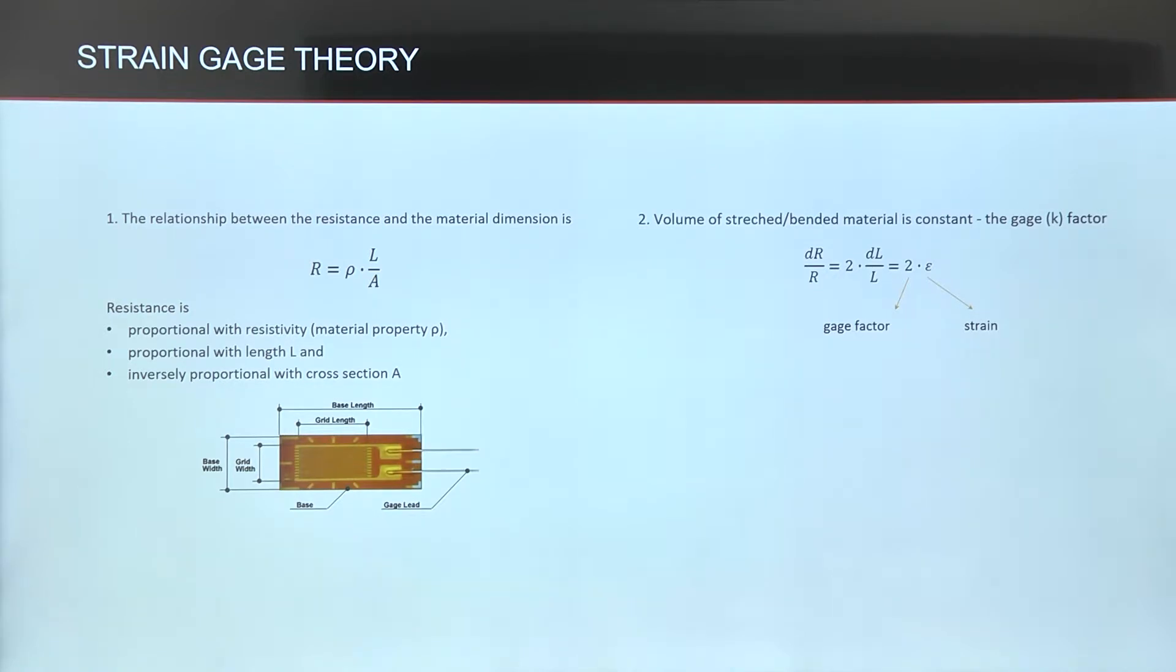If we consider that the volume of stretched, bended or compressed material stays the same and we derivate the earlier mentioned resistance formula, we get the relationship between resistance change and the strain, called gauge factor. We can find the strain gauge factor in the specification of the sensor element issued by the manufacturer.